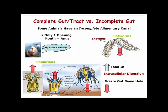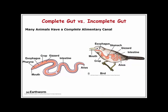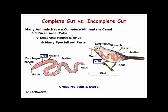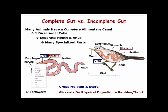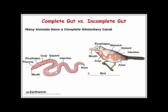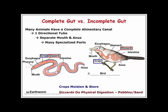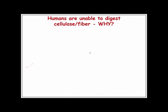With a complete alimentary canal we can do a lot more — it's a directional tube with a separate mouth and anus and many specialized parts. This includes the crop, a small pouch that holds material, and the gizzard, which helps in digestion. The earthworm and the bird shown here do not have teeth and cannot grind food as we do, so they have a gizzard instead.